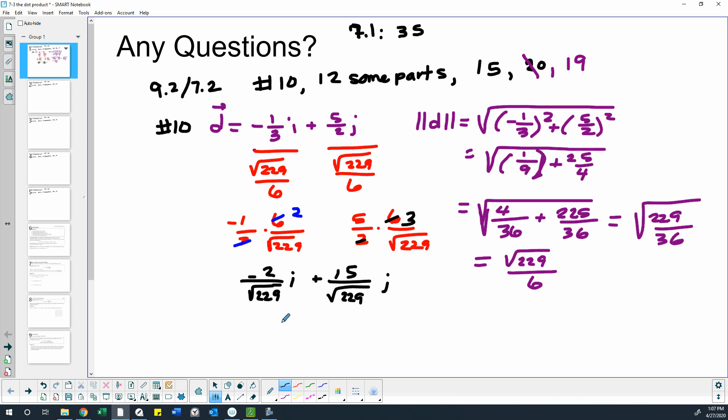And one way that you could check your work is to go ahead and find the magnitude of this. So to do that, we would square this, square this. So that would be 4 over 229, and this would be 225 over 229, which gives us 229 over 229, which is 1. So that does have a magnitude of 1, so I think I did that right.